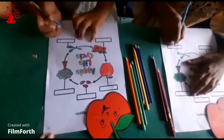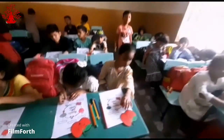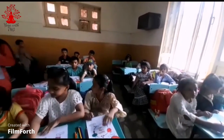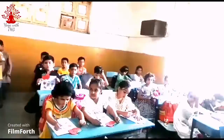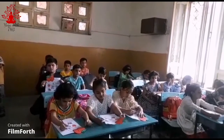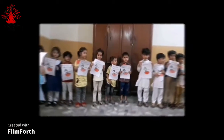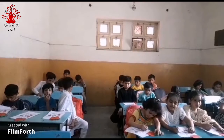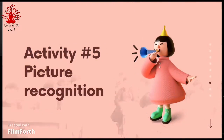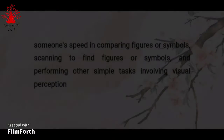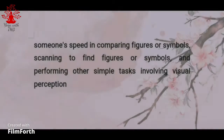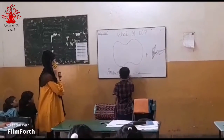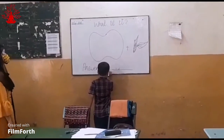Hum logon ne bachon ko drawing ke liye pages diye jinke upar shapes bani hui thin aur unko draw karna tha. Bahut se bachche mathematics mein achche ho sakte hain, bahut se bachche word recognition mein achche ho sakte hain, aur shayad wo painting mein achche na hon — lekin bahut se aise bachche bhi ho sakte hain jo painting mein bahut achche hon aur numeric values ko hal karne mein itni achchi command na rakhte hon. Fifth activity jo hum logon ne karwai thi wo thi picture recognition. Isme hum logon ne bachon ko ek picture dikhai aur isko guess karne ka kaha. Board mein apple ki shape bani thi aur bachche ne usse pehchaan liya.